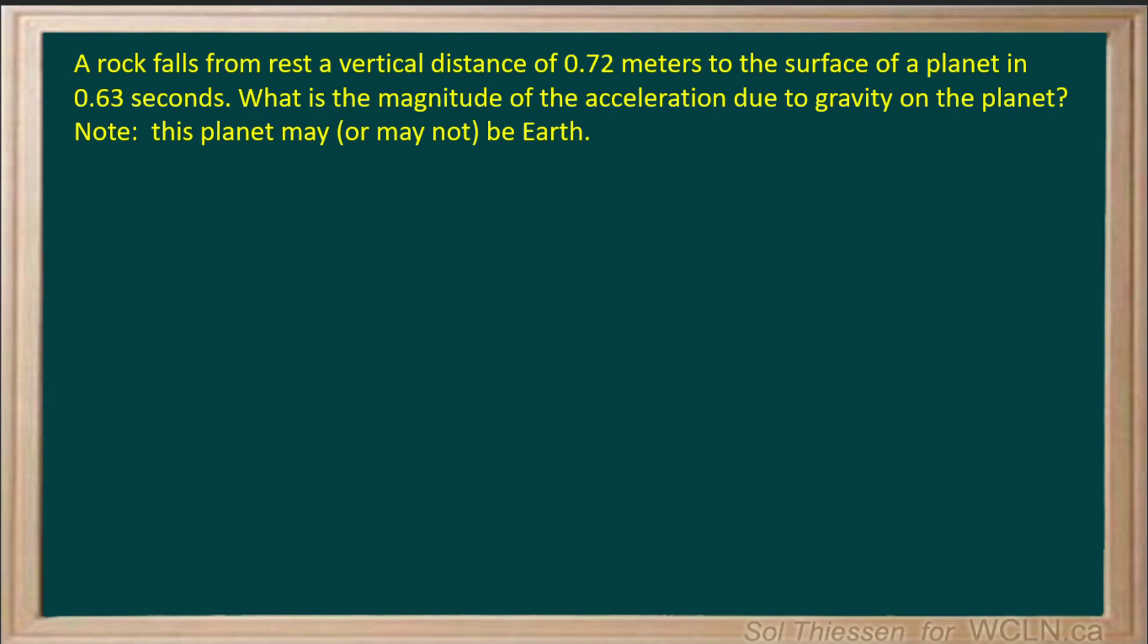Okay, so let's write down what we know. The rock falls from rest, so its initial velocity is 0 meters per second. The distance that it falls, or the displacement, is downwards. So we'll call it negative 0.72 meters. The time that that takes is 0.63 seconds.